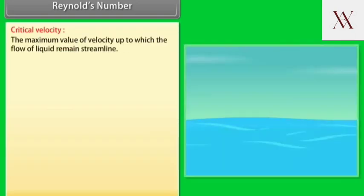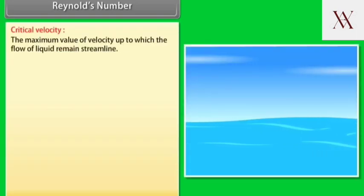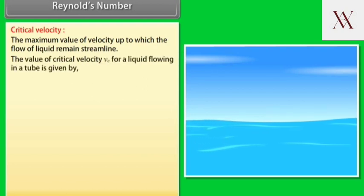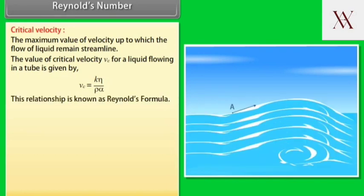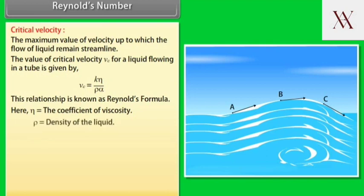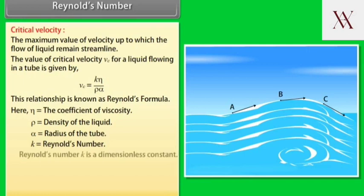Reynolds number. Critical velocity is the maximum value of velocity up to which the flow of liquid remains streamlined. The value of critical velocity Vc for a liquid flowing in a tube equals k eta upon rho alpha. This relationship is known as Reynolds formula. Here eta equals coefficient of viscosity, rho equals density of the liquid, alpha equals radius of the tube, k equals Reynolds number.